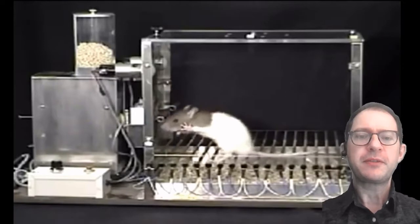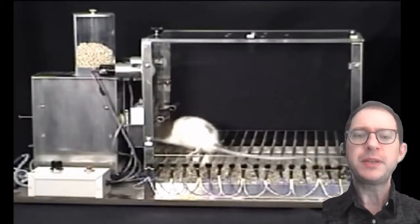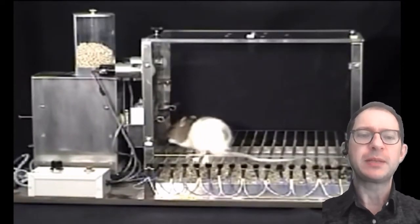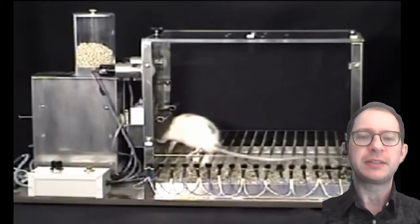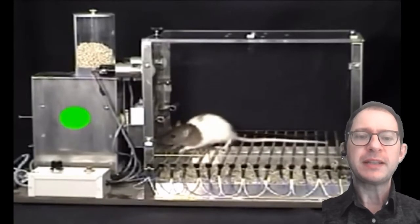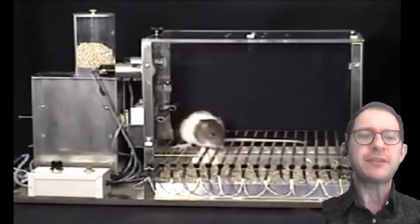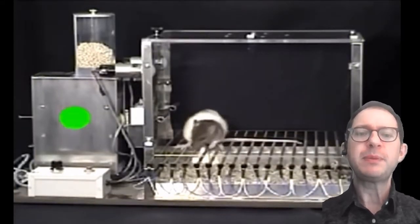First, we tell the rat that you have to be close to the lever, and we do this by giving it food anytime it approaches the lever. The delivery of food is marked in the video by a green dot. At this point, the rat does not need to press or even touch the lever.